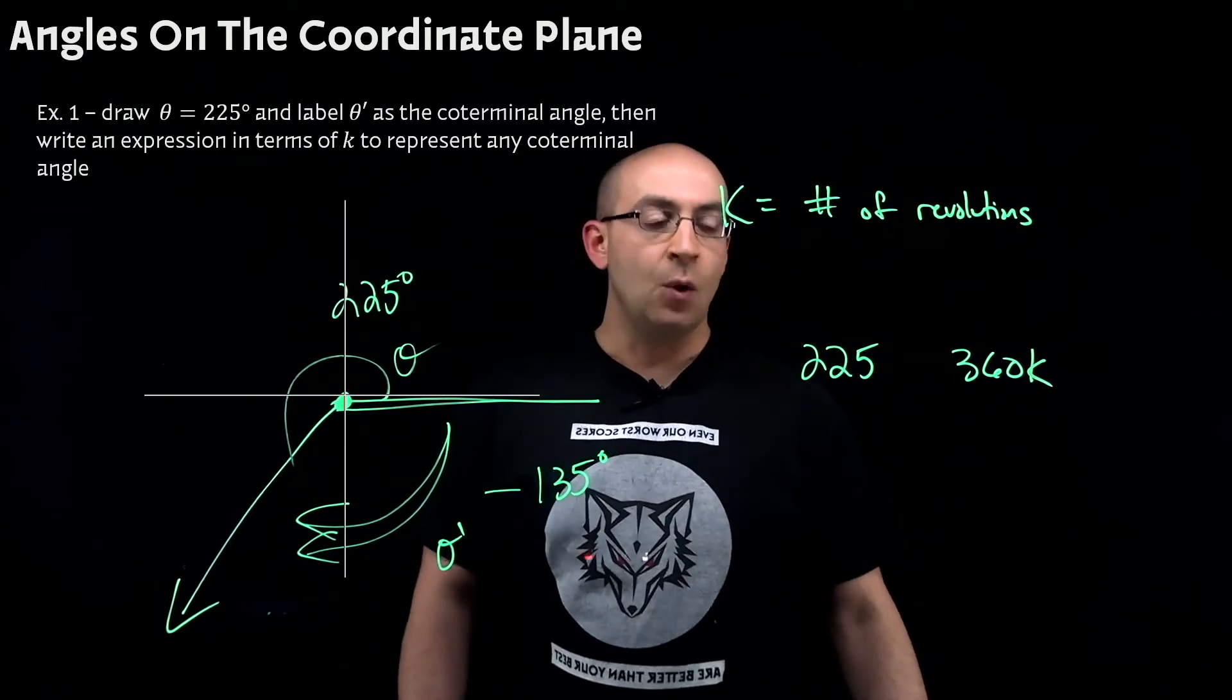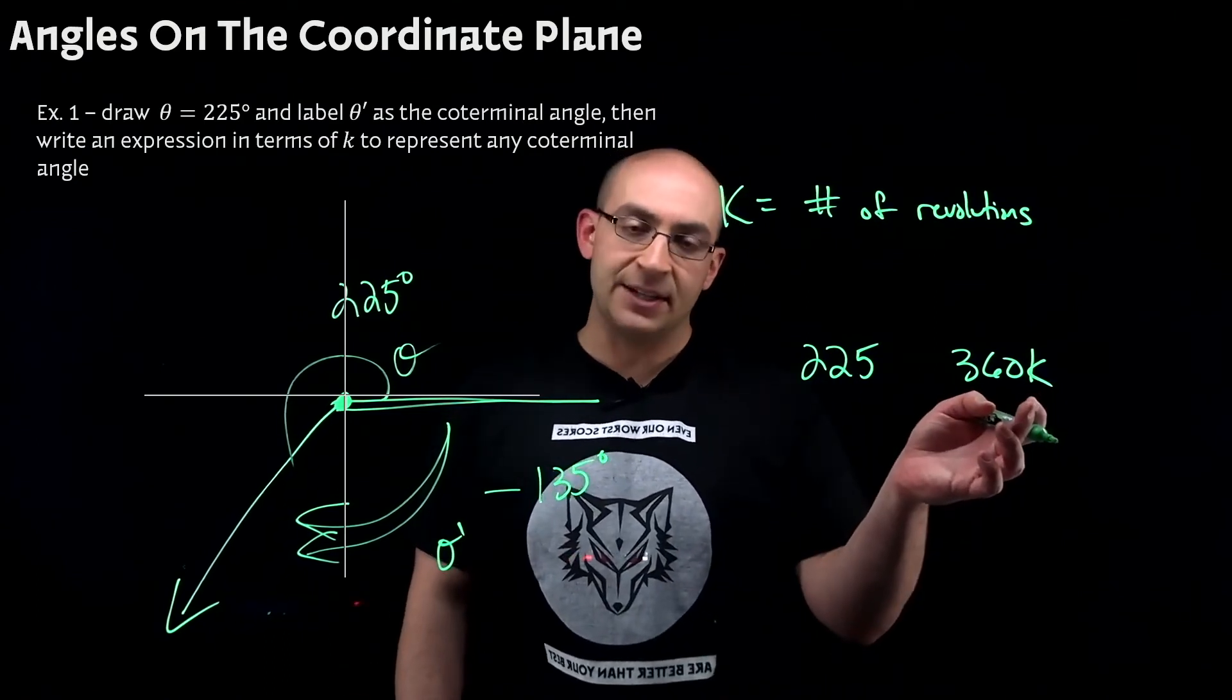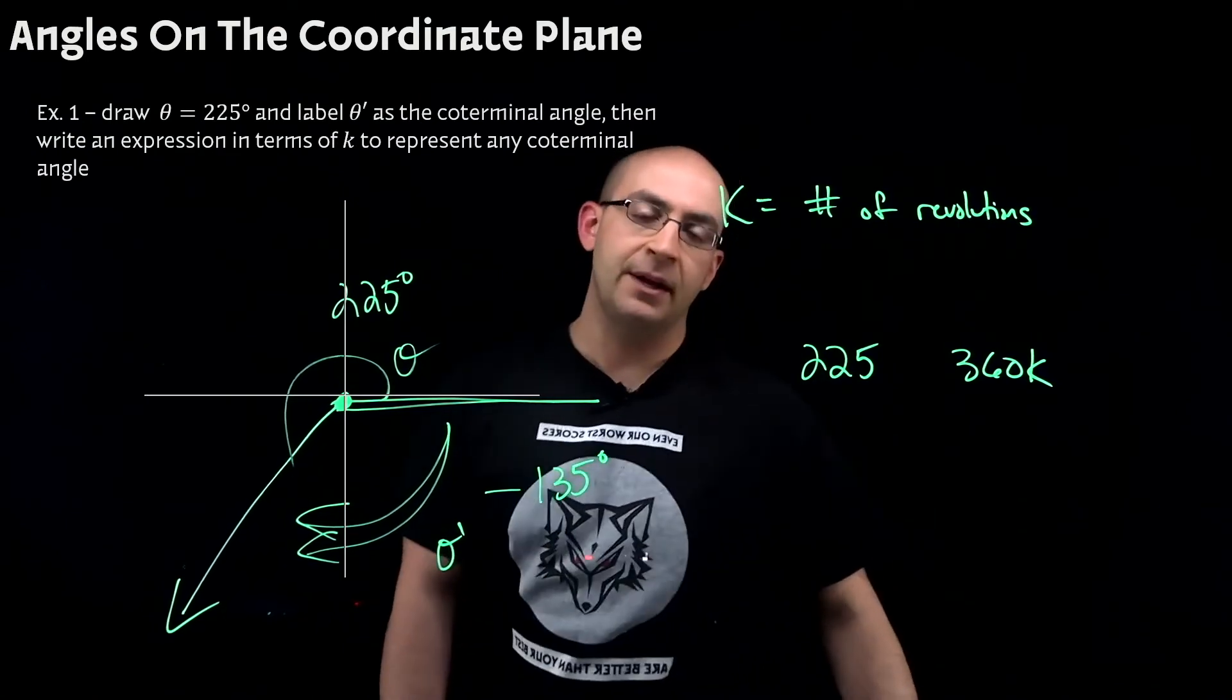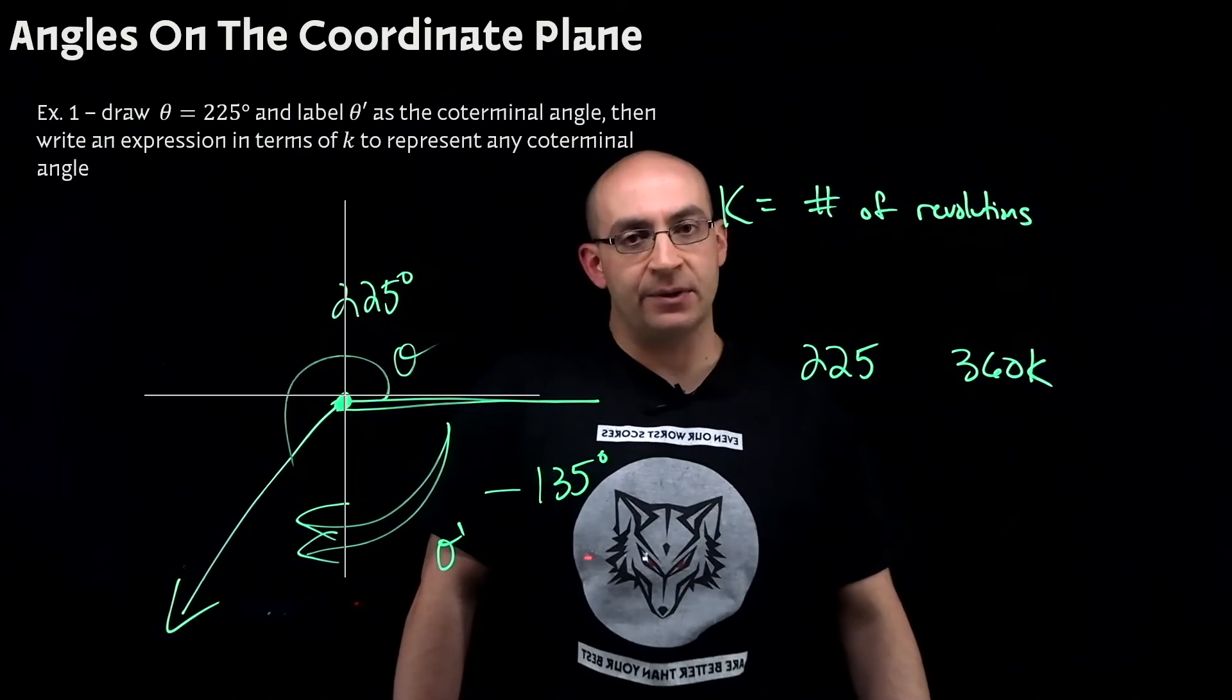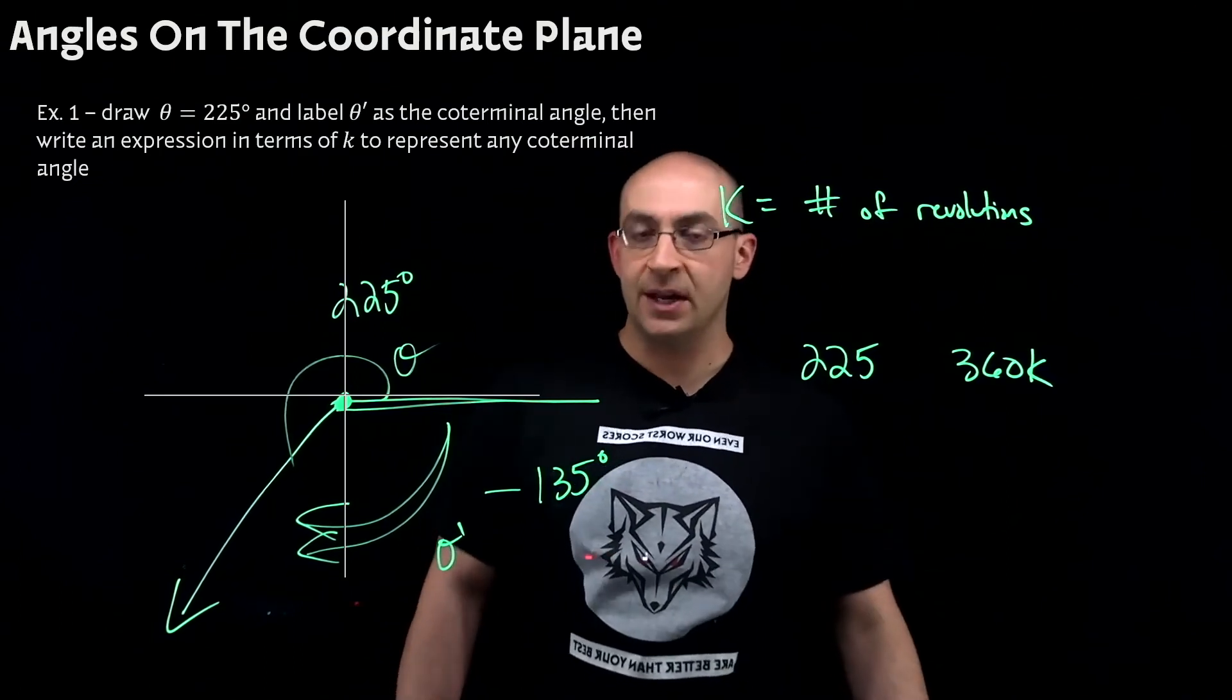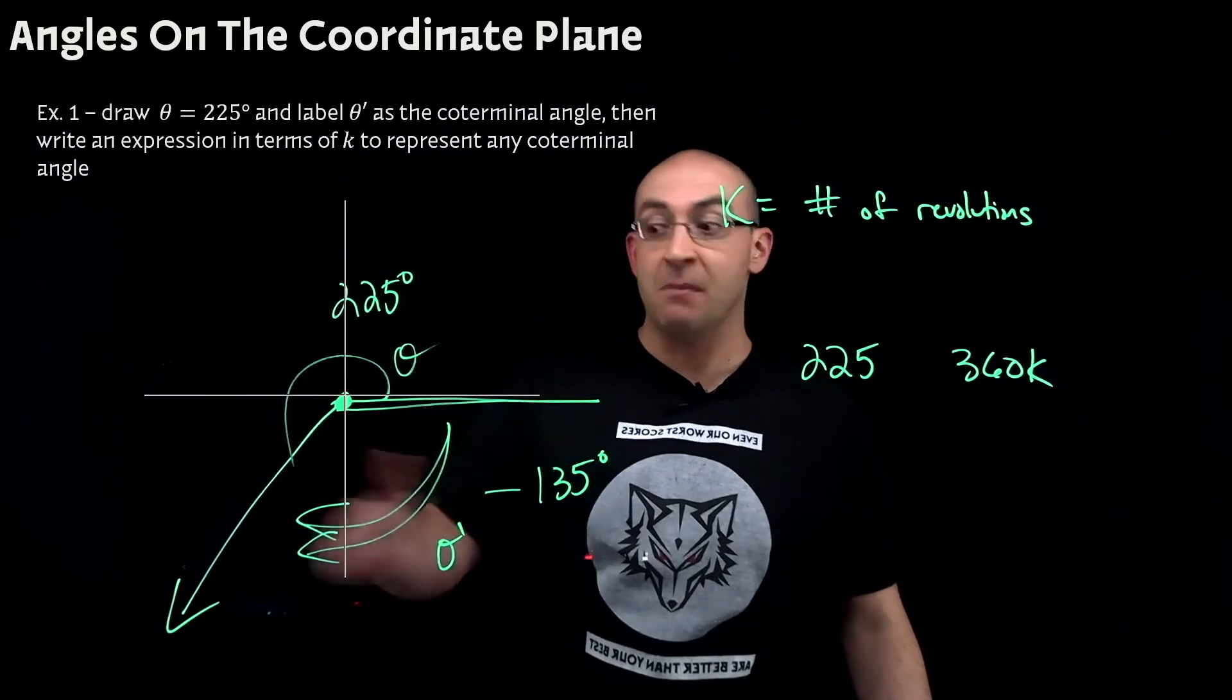For example, one revolution would obviously substitute 1 in for K and give me 360. Two revolutions at 720 and so on and so forth. Now, if I were to add those values, 360 degrees or 720 degrees to 225 degrees, I would get values that would just be multiple times around,